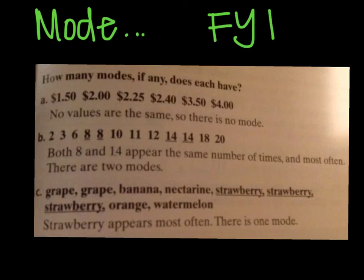Just a FYI on mode. I kind of did mention this briefly, but there's some examples here for you. If you look at example A, there are not any values that are the same. So, there is no mode. And B, you have the number 8 twice and the number 14 twice. They appear the same number of times and they're the most often. So, there are two modes, 8 and 14. The last example C, we have a list here. You notice grape appears twice, but then strawberry appears three times, which means strawberry is the one mode. So, you can have none, you can have one, you can have more than one. It just depends on the numbers that you have or topics.